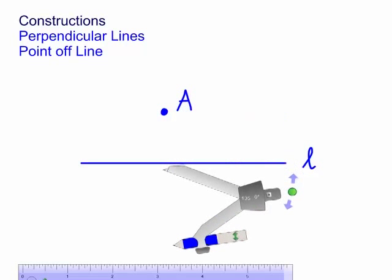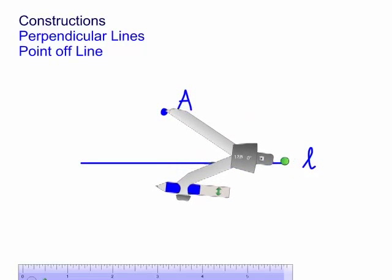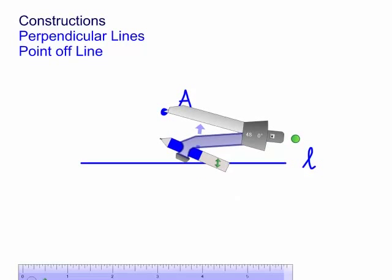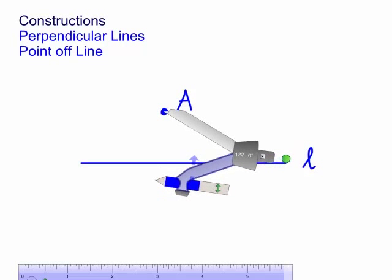Now we need to open it up at a radius. Now, what radius? Well, I just want to show you. The radius has to be greater than the distance A is off the line. I can't have it like, for instance, that radius. I need to have it further than that distance. So let's actually just make it there, for instance.